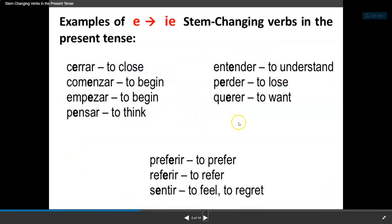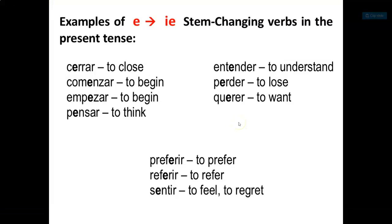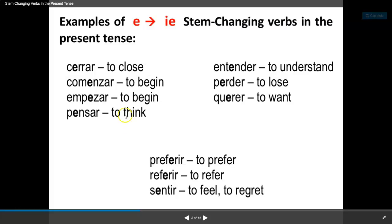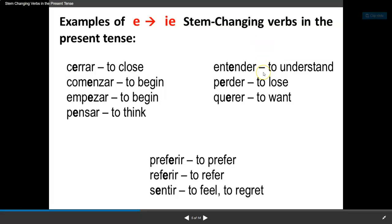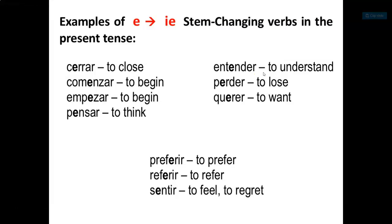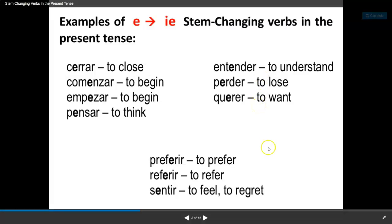Here are some examples of verbs that change from E to IE: cerrar — to close; comenzar — to begin; empezar — to begin as well, both mean the same; pensar — to think; entender — to understand; perder — to lose; querer — to want; preferir — to prefer; referir — to refer; and sentir — to feel or to regret.